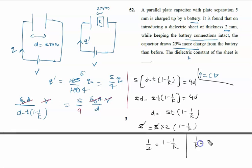So we will write 1 by K is 1 minus 1 by 2, which is 1 by 2. So K is given by 2.